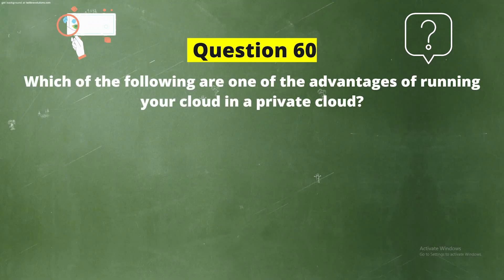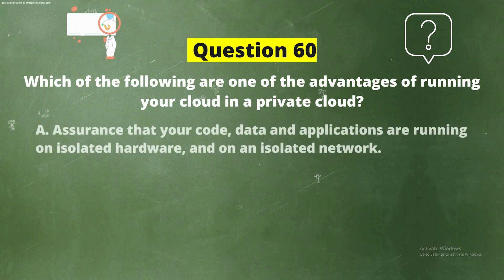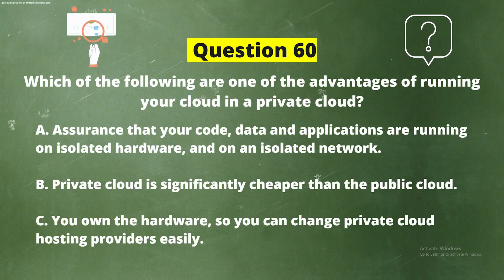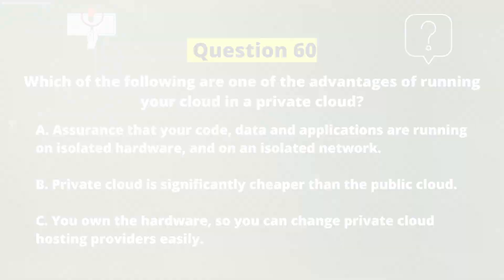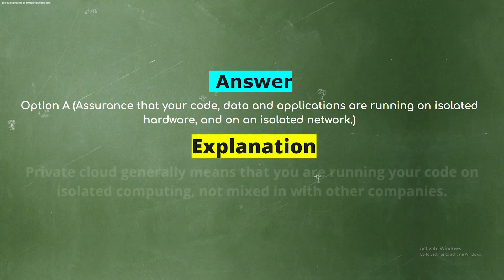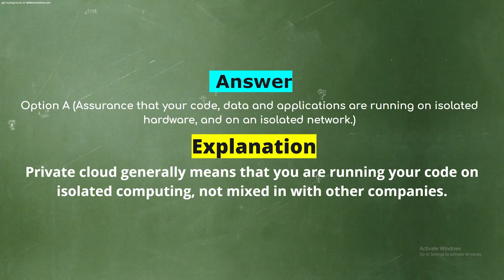Question 60: Which of the following is one of the advantages of running your workloads in a private cloud? Options: Option A, assurance that your code, data, and applications are running on isolated hardware and on an isolated network; Option B, private cloud is significantly cheaper than public cloud; Option C, you own the hardware so you can change private cloud hosting providers easily. The correct answer is Option A. Explanation: Private cloud generally means that you are running your code on isolated computing, not mixed in with other companies.